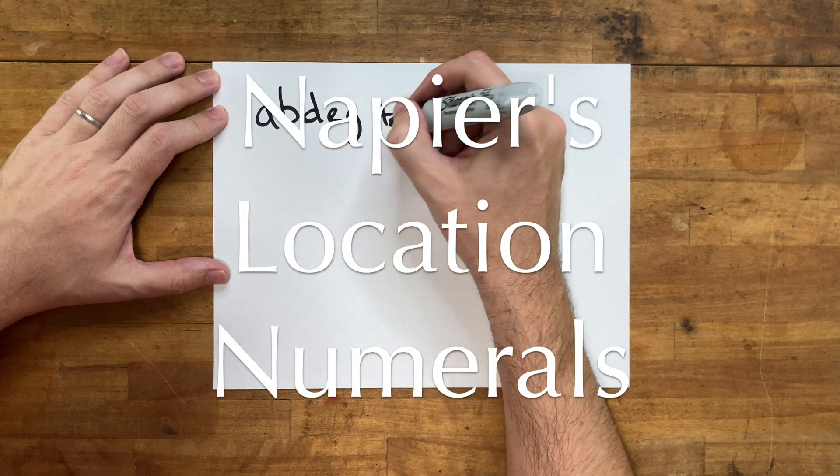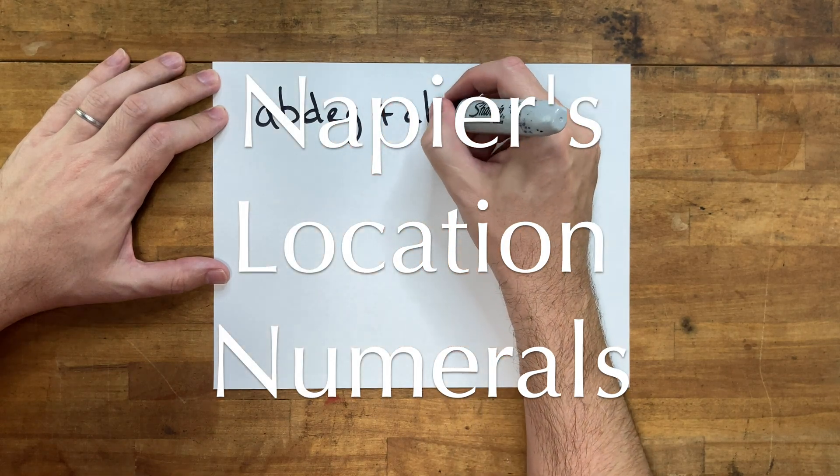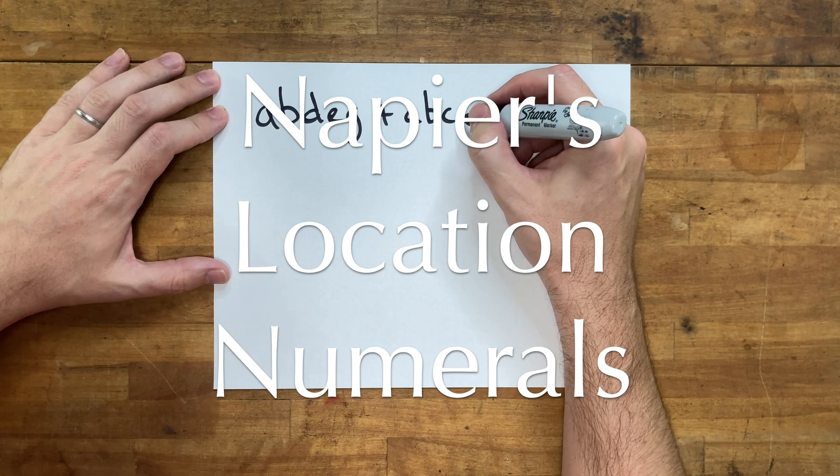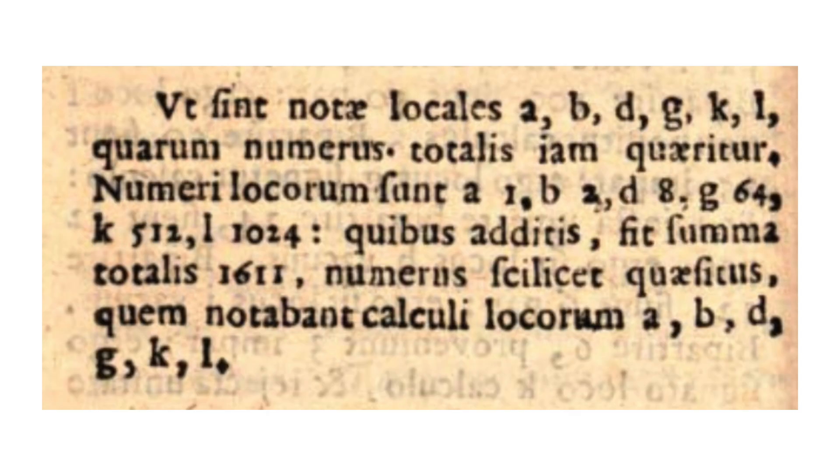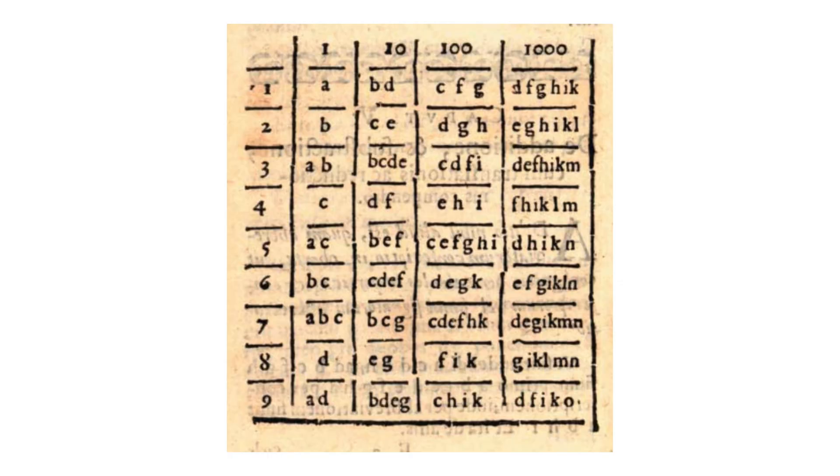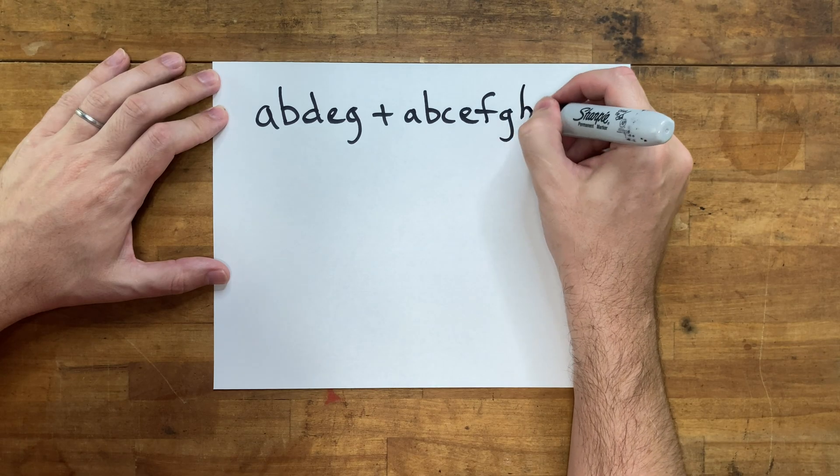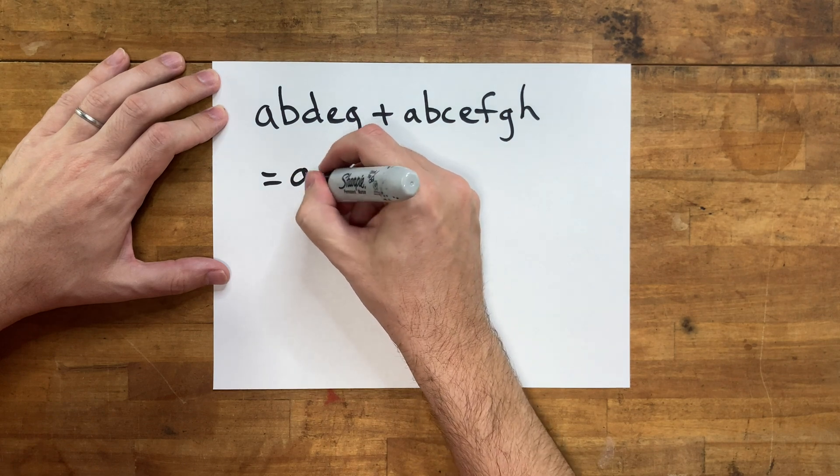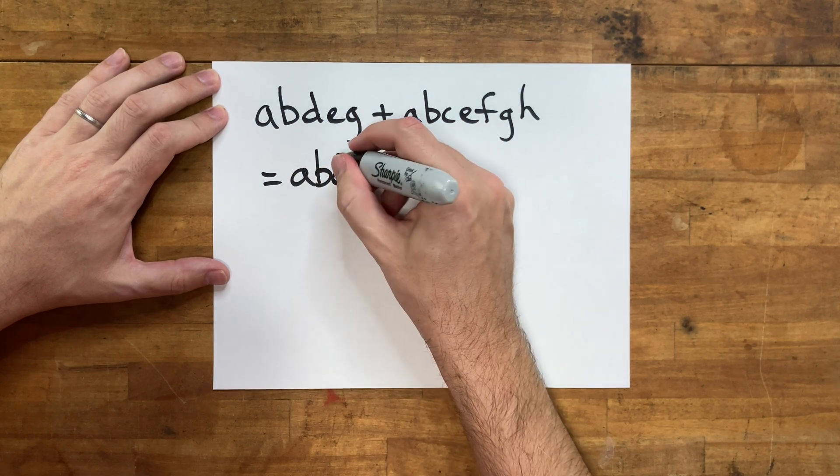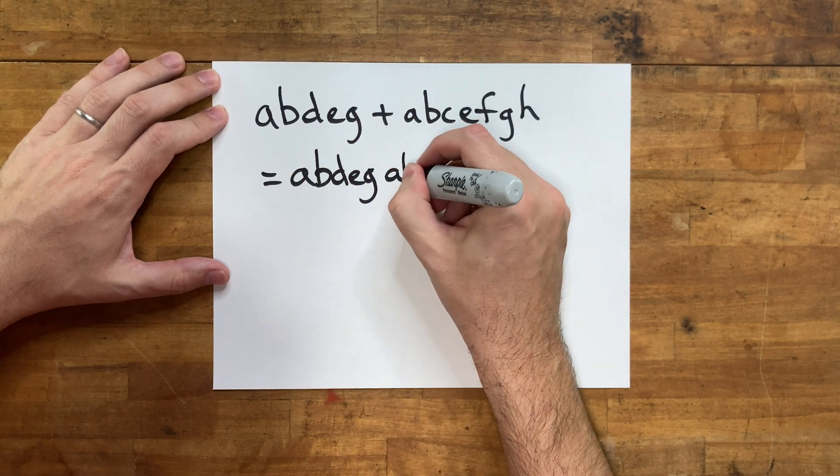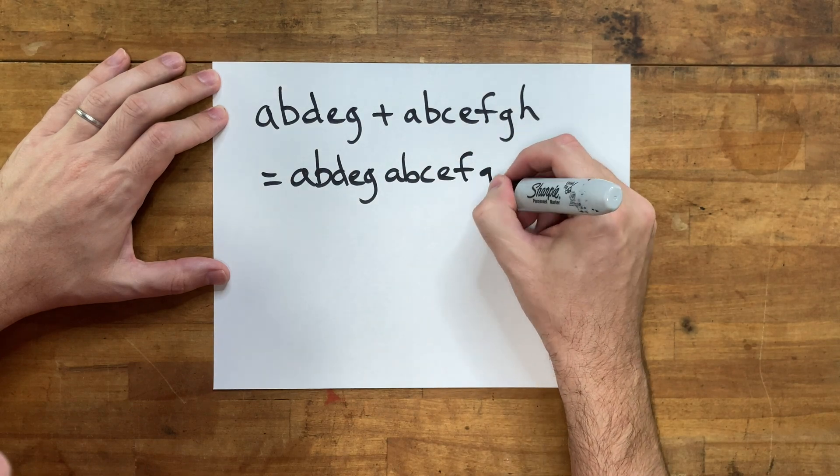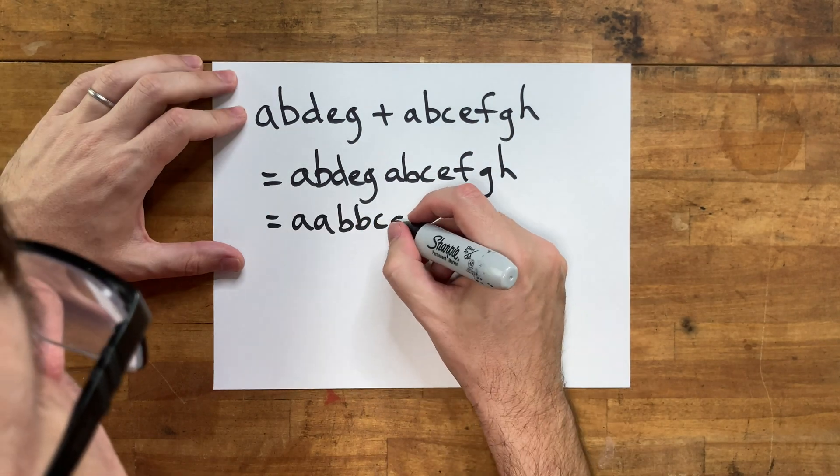This is a simple addition problem using Napier's Location Numerals from 1617. It was a totally new and revolutionary way of writing numbers, which was immediately forgotten by history. It's not a typical positional base 10 number system. It's closer to base 2, but there's no zero, and despite the name, the locations of the symbols don't affect their value.